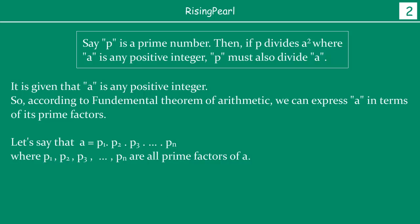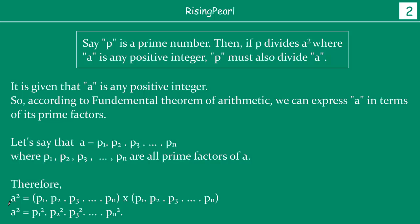Now we can also say that therefore, if you want to find a squared, then essentially if you can write a in terms of its prime factors, then a squared is nothing but the same thing multiplied by itself. That means each of the prime factors will be squared. So a squared will be nothing but p1², p2², p3², and so on. Let's call this our equation number one.